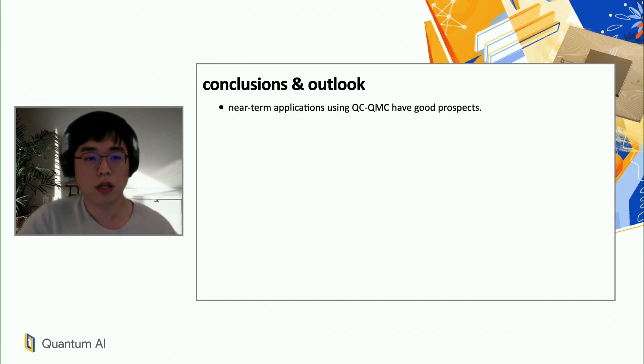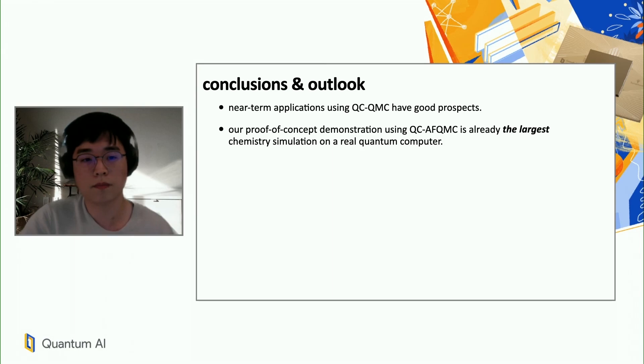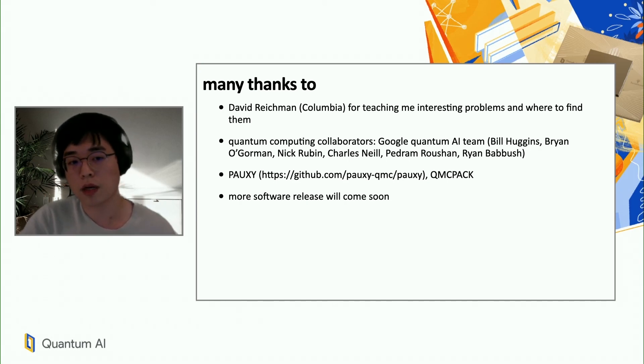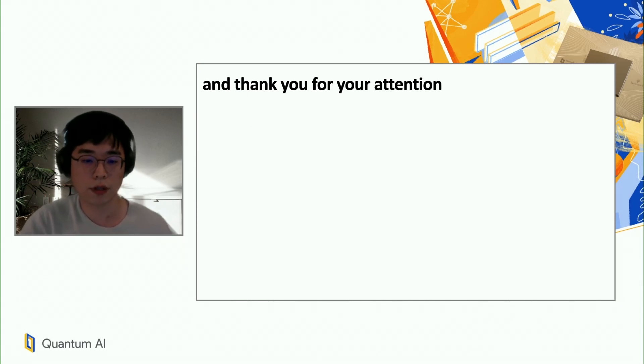With that, I would like to conclude. I hope that I was able to convince you that near-term applications using this QCQMC algorithm have good prospects. We already obtained, as a proof of concept, we really did the largest chemistry simulation on a real quantum computer, and since we're just beginning to see what we can do with this algorithm, there is still so much to do. I hope that the hybrid algorithm of this type will become an alternative to VQE, and my own goal is to see a runtime advantage with this. I would like to thank my collaborators, and also I would like to thank you for your attention.